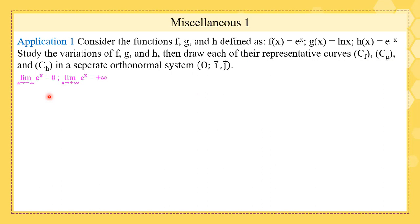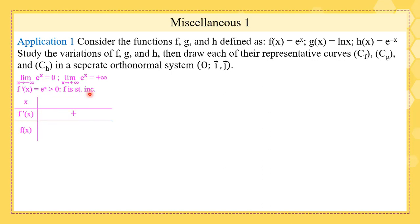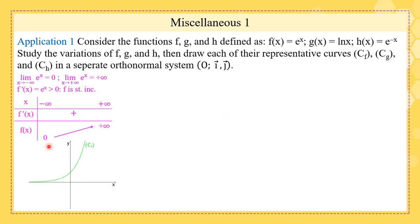For the first function f, the limit at minus infinity is zero and the limit at plus infinity is plus infinity. f'(x) = eˣ, which is positive, so f is strictly increasing. The table of variations: the domain goes from negative infinity to positive infinity, f' is positive, f increases from zero to plus infinity. The graph has a horizontal asymptote which is the x-axis.